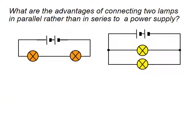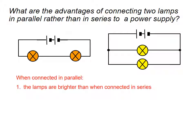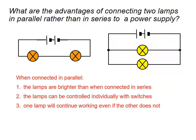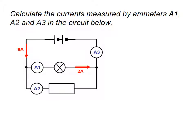The advantages of connecting two lamps in parallel rather than in series: the lamps are brighter, they can be controlled individually by switches, and one lamp will continue working if the other breaks. In the circuit shown, A1 equals 2 amps, A2 equals 4 amps (since 4 + 2 = 6), and A3 equals 6 amps returning to the battery.